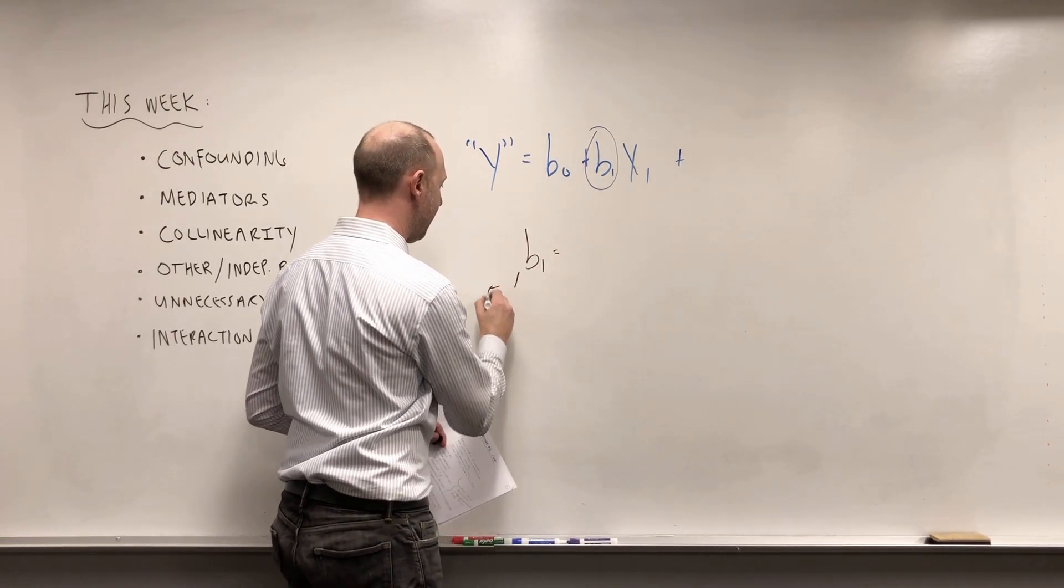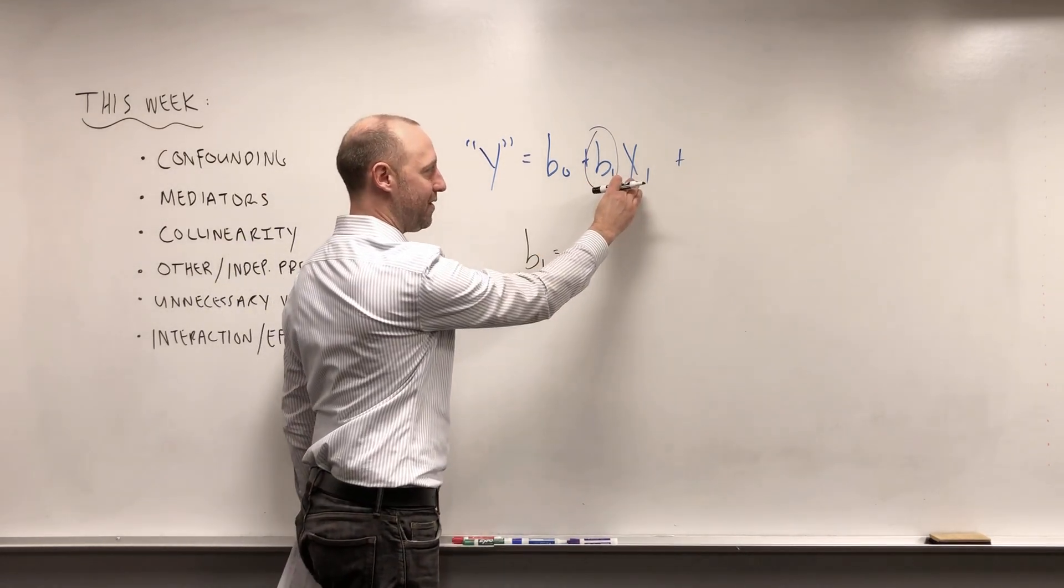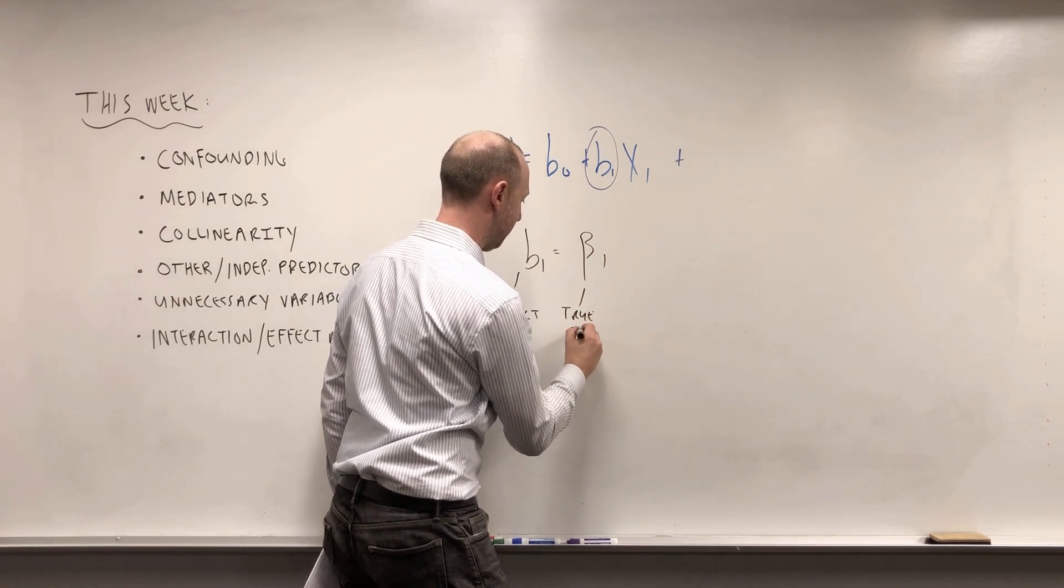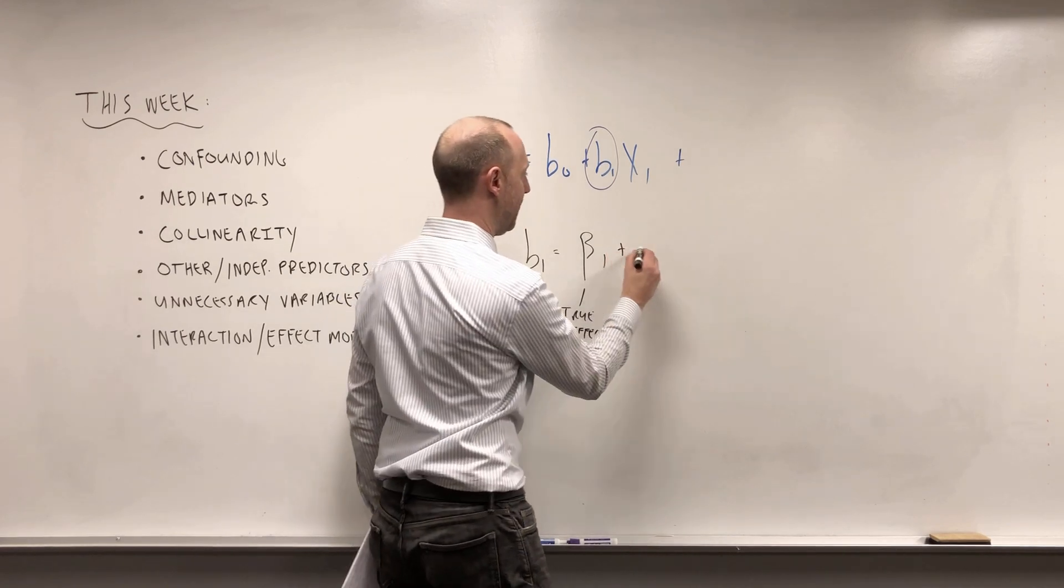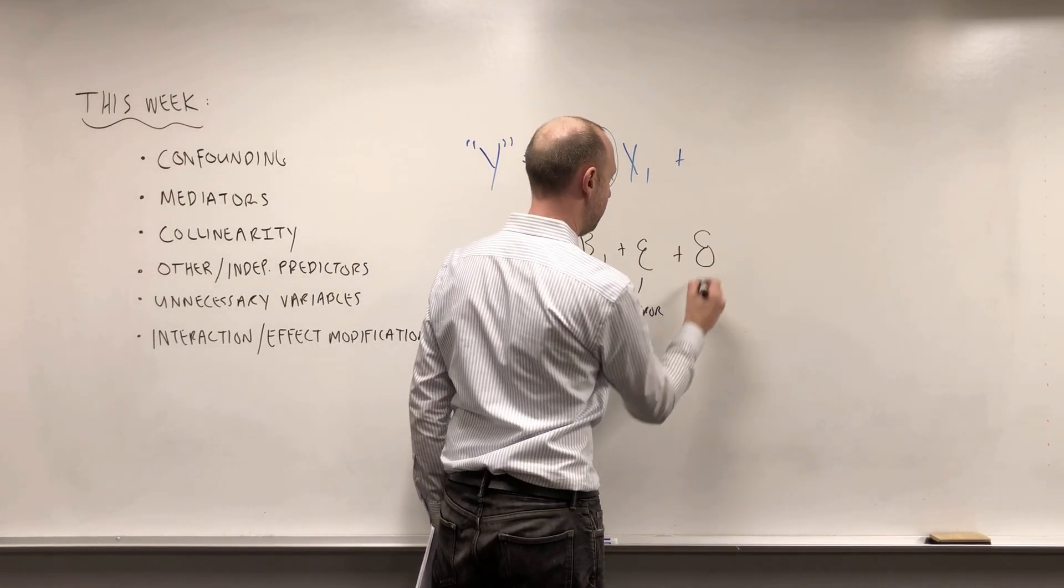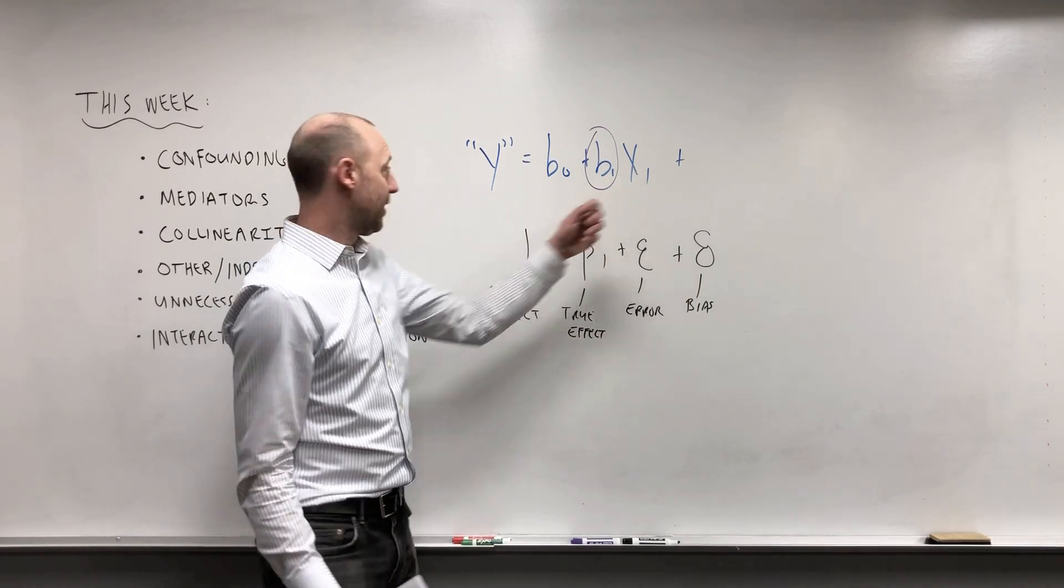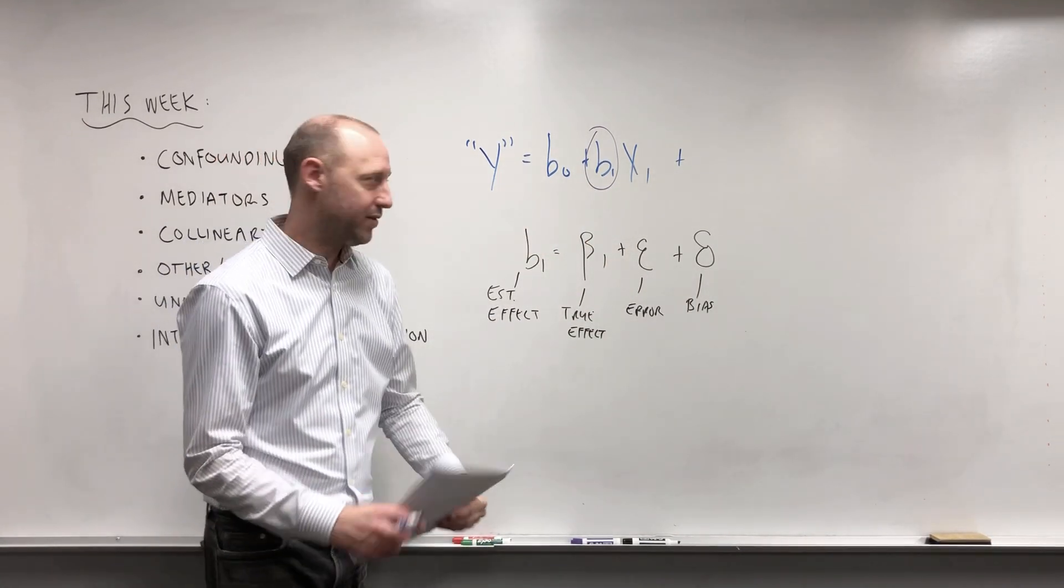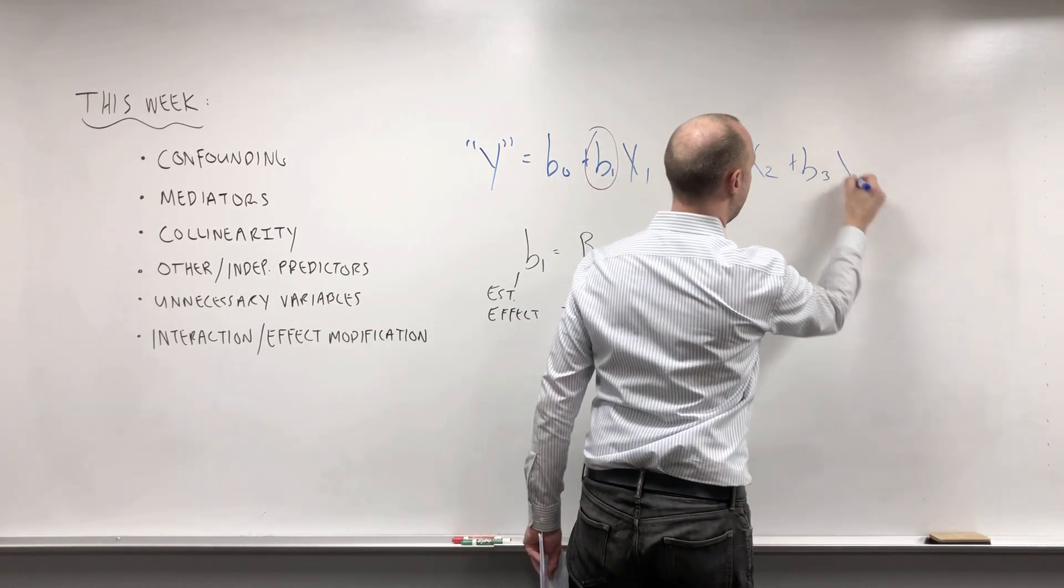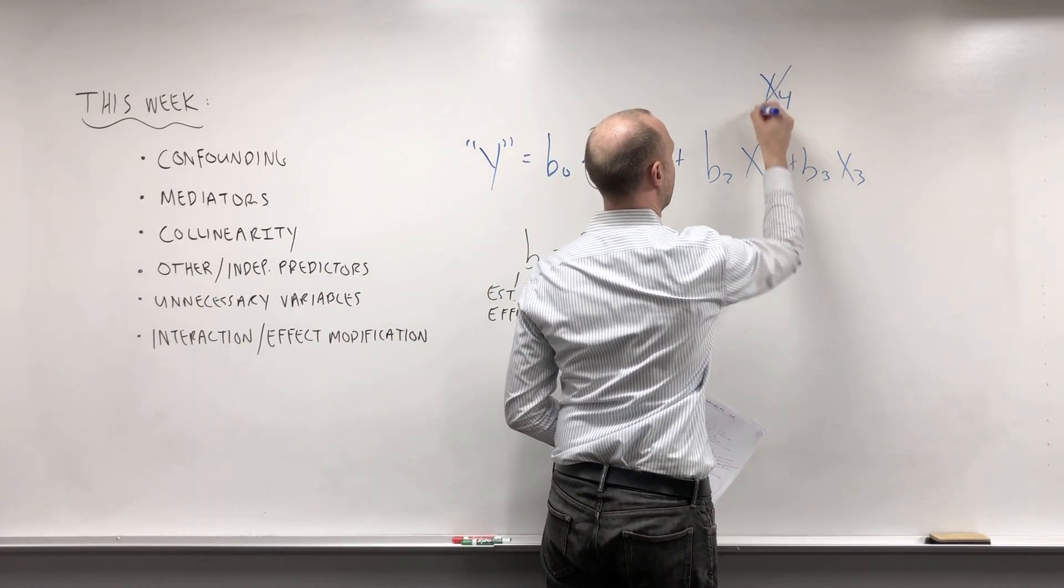We said that b1 which is our estimate of the effect, so what is our sample estimate of the effect that x1 has on the outcome, is going to be equal to the true effect plus some error. There's going to be some random noise or some random error in there plus some bias. Especially when working with observational data there may be confounders, there may be collinearity, there may be all these other things going on. So we want to learn about including other variables in the model. We're deciding which variables should go in, maybe x4 we decide should not go in our model.